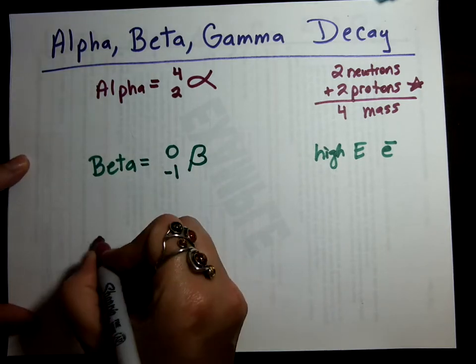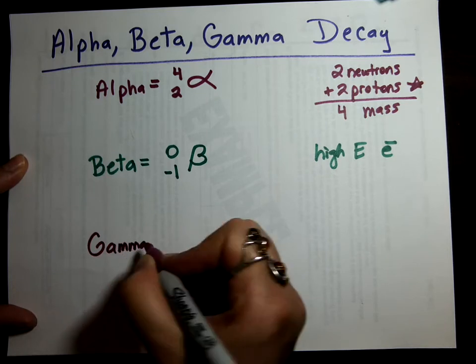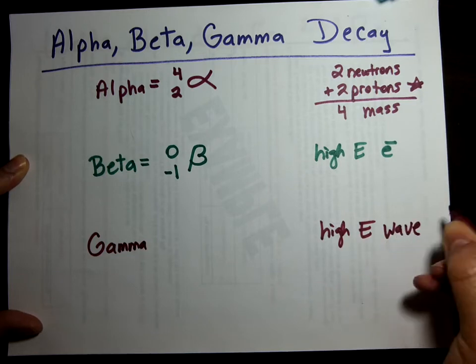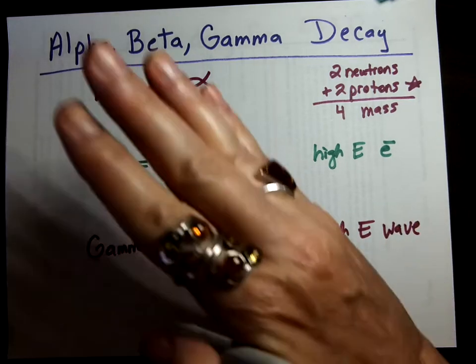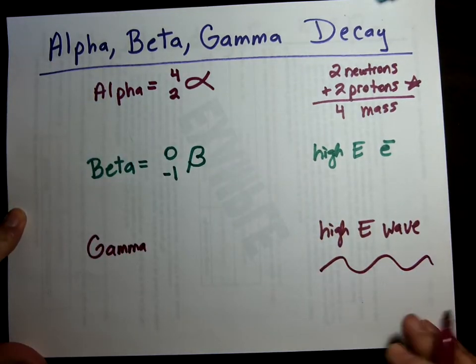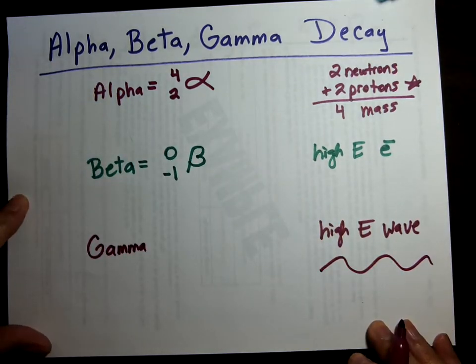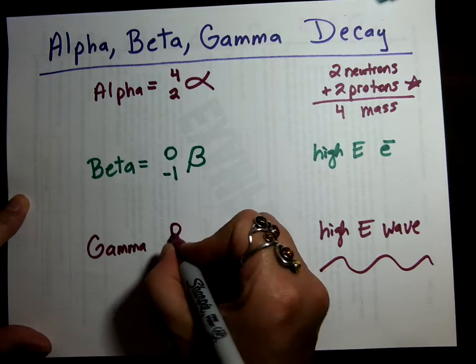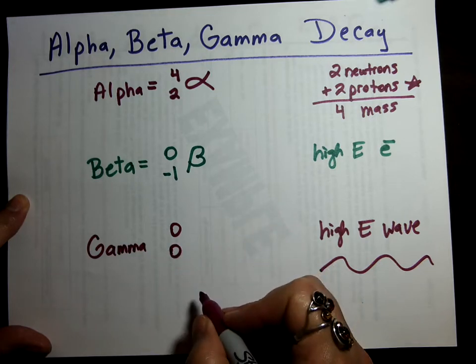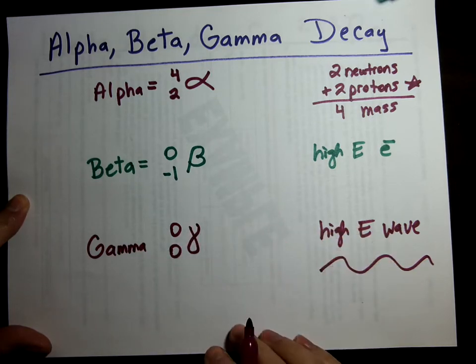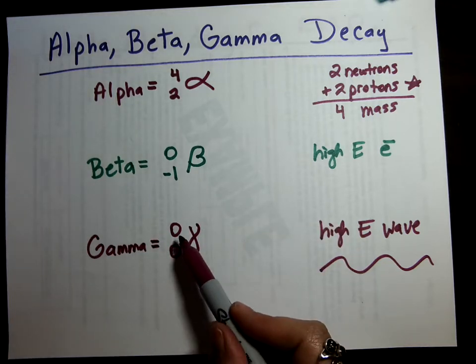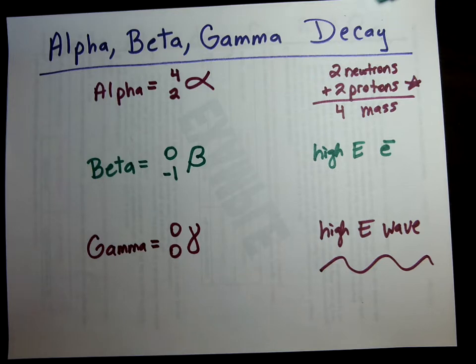And finally, we have gamma. Now gamma is just a high energy wave. So a wave doesn't have protons or neutrons or electrons. So its mass is zero, and the protons is zero. Gamma looks like that. So a gamma ray is symbolized 0, 0, gamma in a chemical reaction.